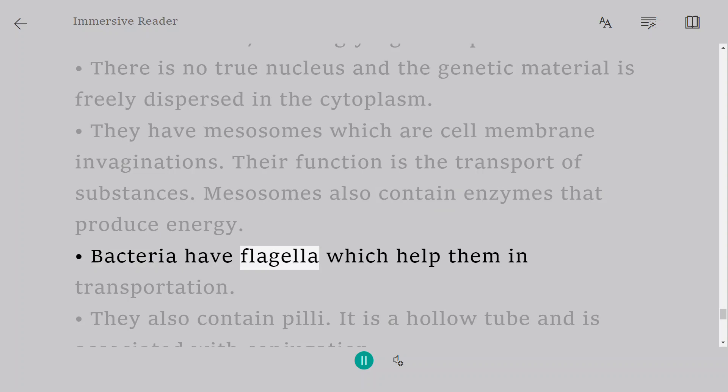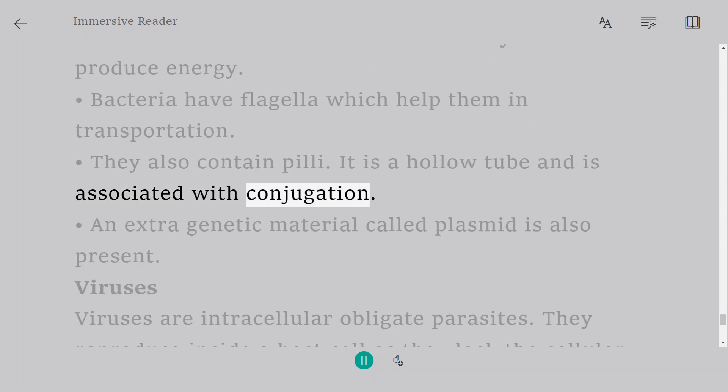Bacteria have flagella, which help them in transportation. They also contain pili. It is a hollow tube and is associated with conjugation. An extra genetic material called plasmid is also present.